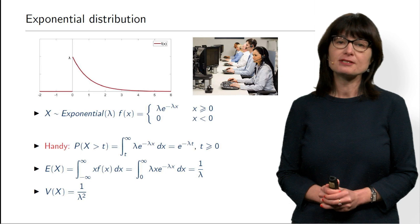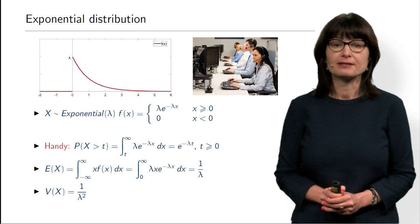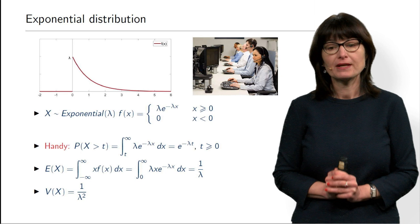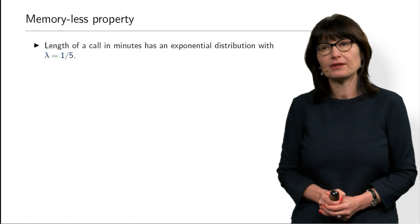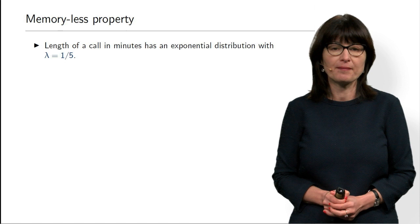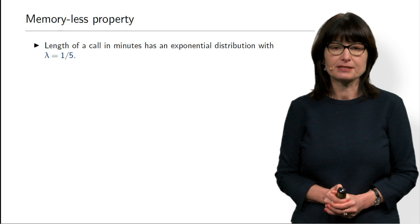In the rest of this micro lecture, we will discuss two remarkable properties of exponential distribution: the memoryless property, and the connection between exponential and Poisson distribution. We start with the memoryless property. Our example: we have a call center with call durations modeled as exponentially distributed random variables with lambda = 1/5, so on average a call lasts 5 minutes.